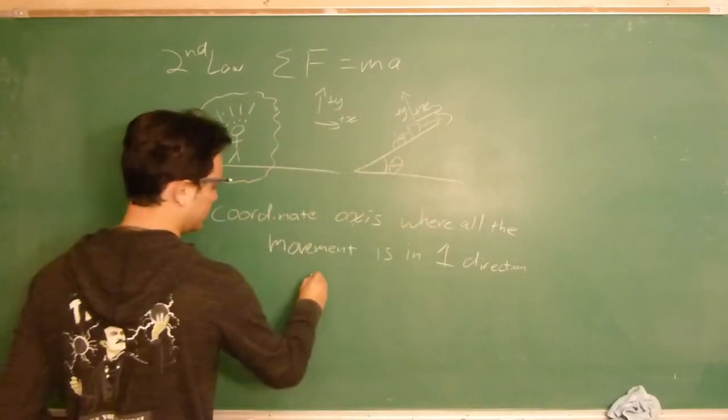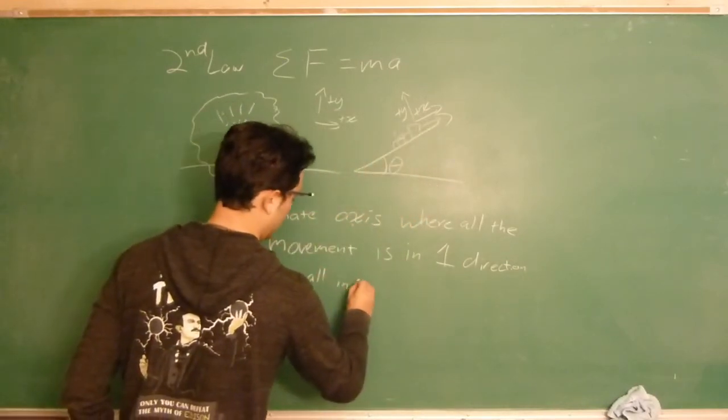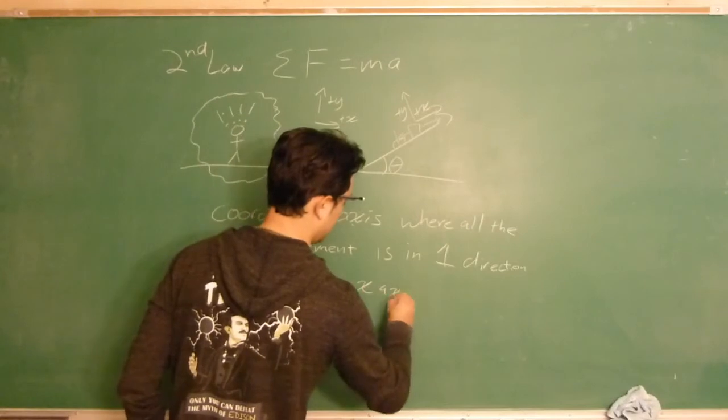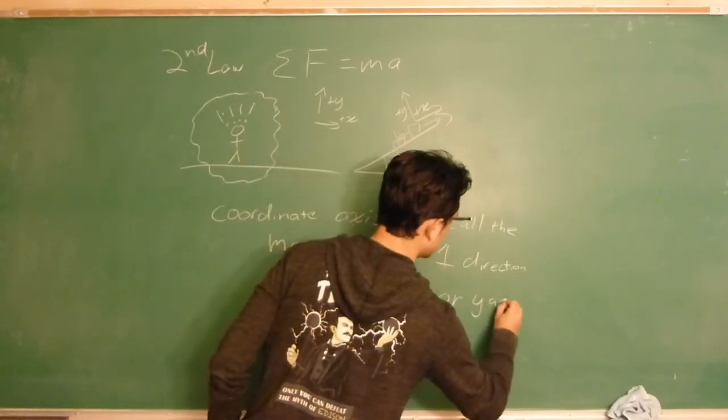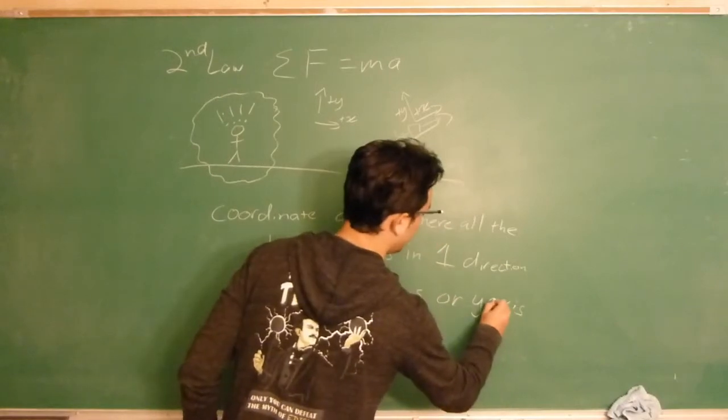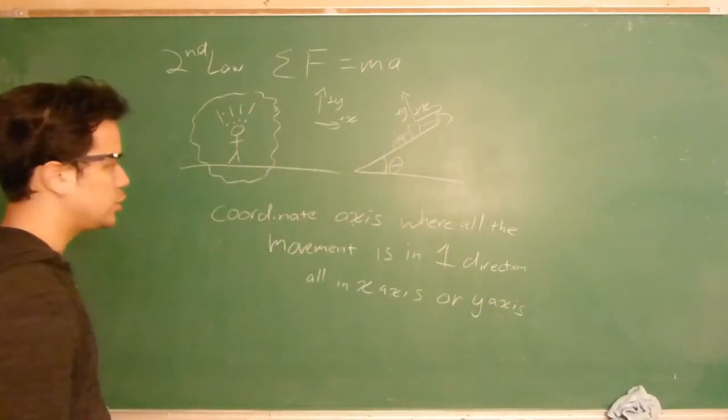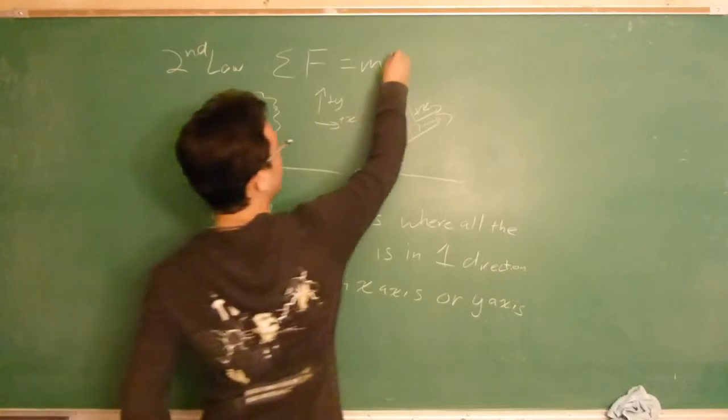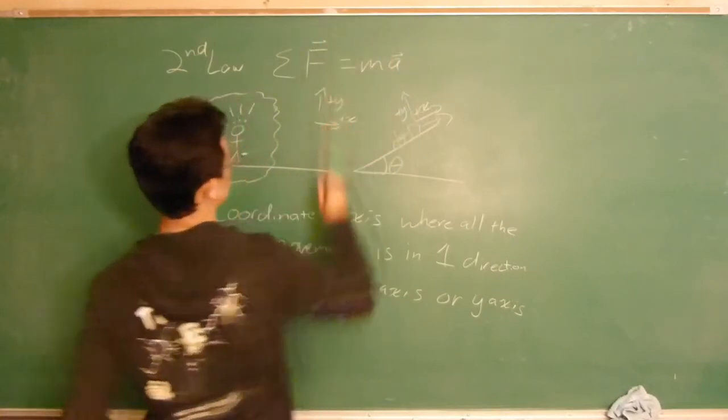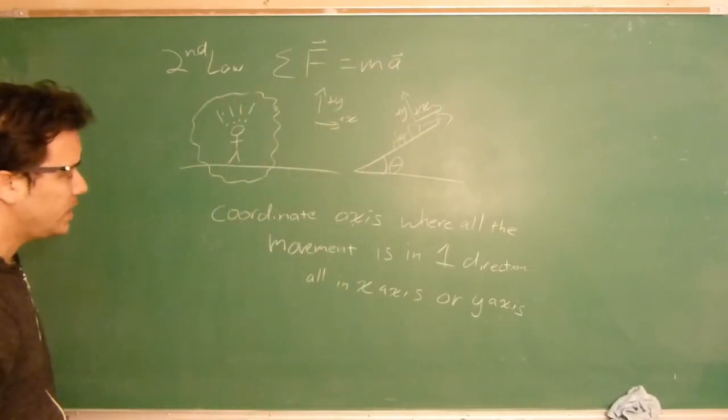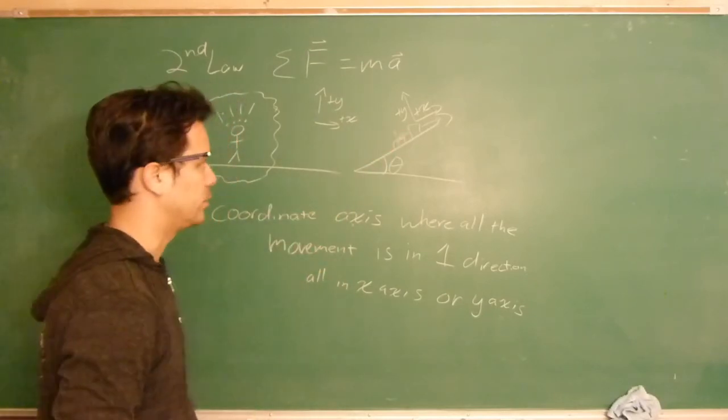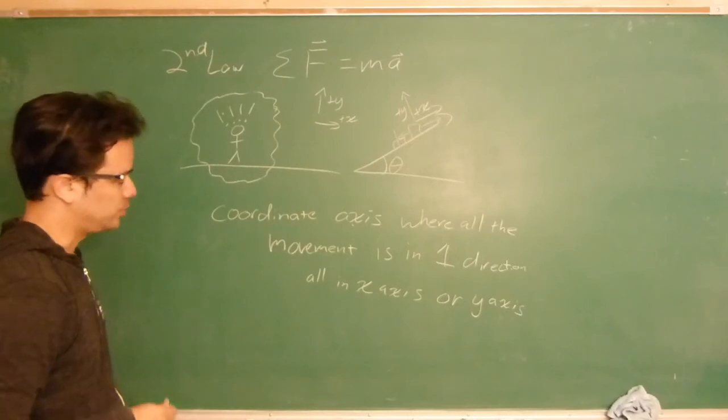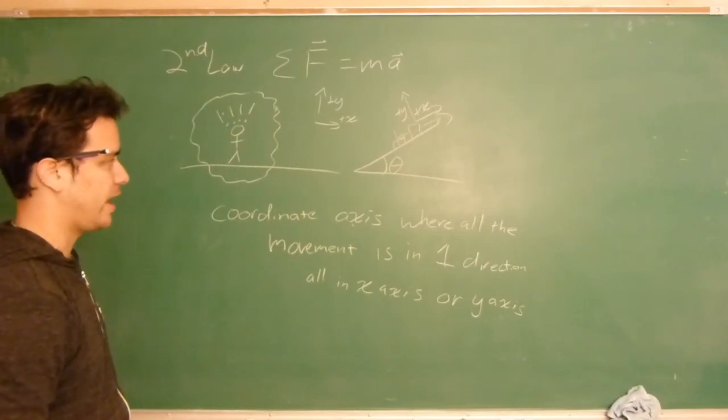Basically, all of it is in the x axis or the y axis, but not both. Because acceleration is a vector. So if you have all of the motion, all the acceleration in one direction, you don't have to worry about splitting that acceleration up, which makes things a lot more complicated if you have to.